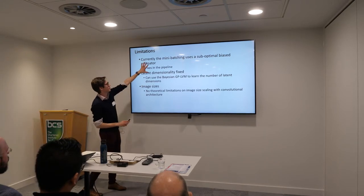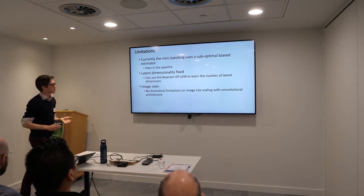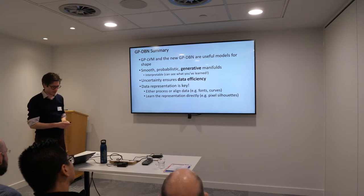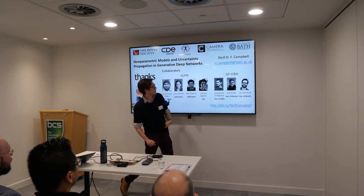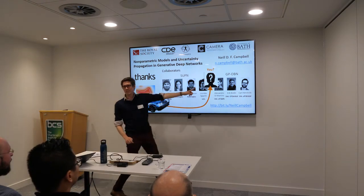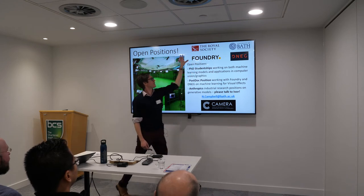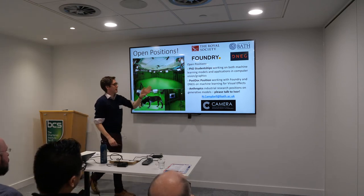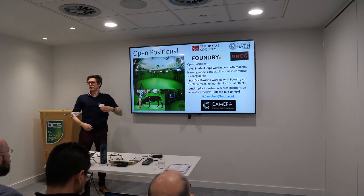Limitations: there are some technical things. I've only shown you small toy images — there's nothing theoretical stopping you from scaling this up, just practical issues. The main thing is we're ensuring data efficiency via generative models and getting nice interpretable spaces that are smooth. Thanks to everyone involved in the structured uncertainty prediction networks work and the deep belief networks work. We have open positions — if you're interested in working on these things, we do a lot of work at Bath with the Foundry and DNEG on visual effects using generative models, and we have postdoc positions for this kind of theoretical work. Anthropics, who Garraway did his work with, are also hiring — come and talk to myself or Ivor afterwards. Thank you very much.